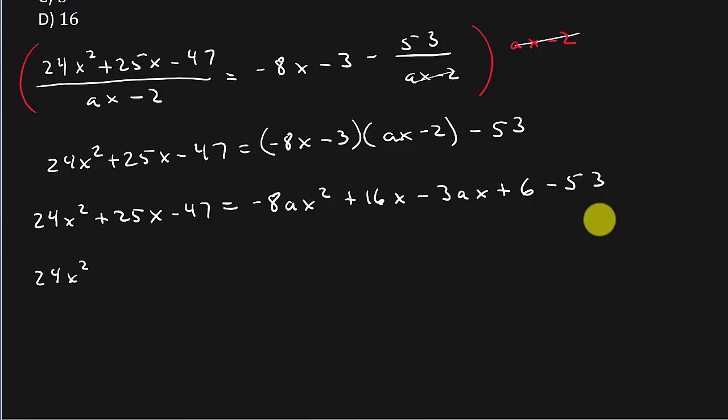So that's going to give us 24x squared plus 25x minus 47 equals negative 8ax squared. So we've got the x's here, so we could do plus 16 minus 3a times x minus 47.